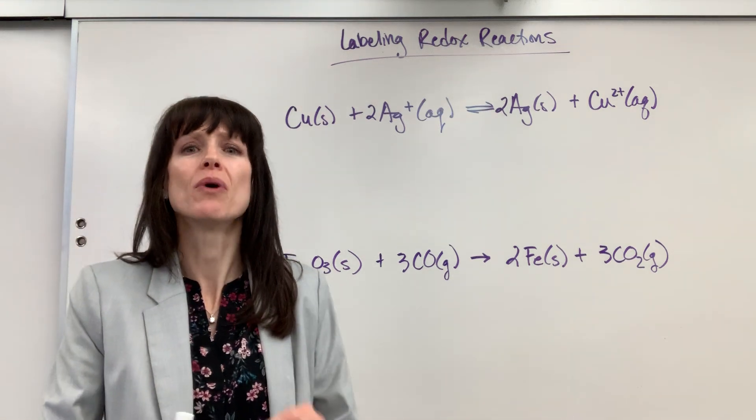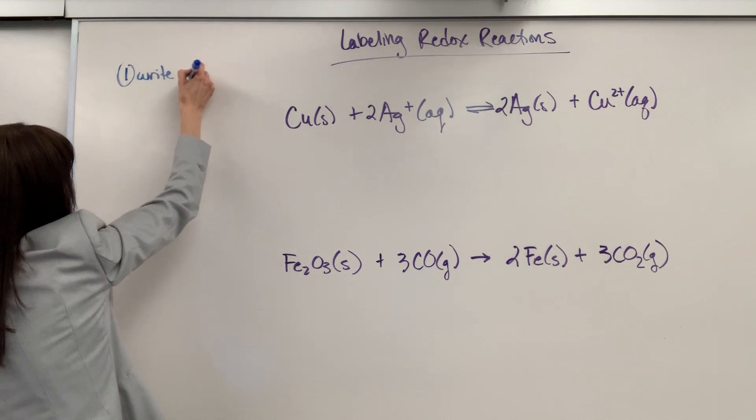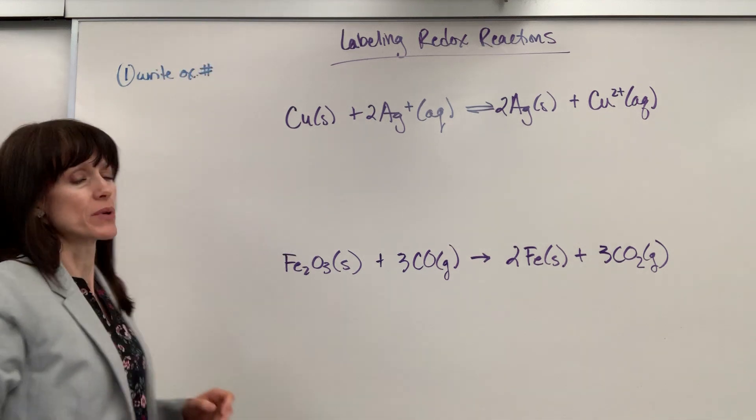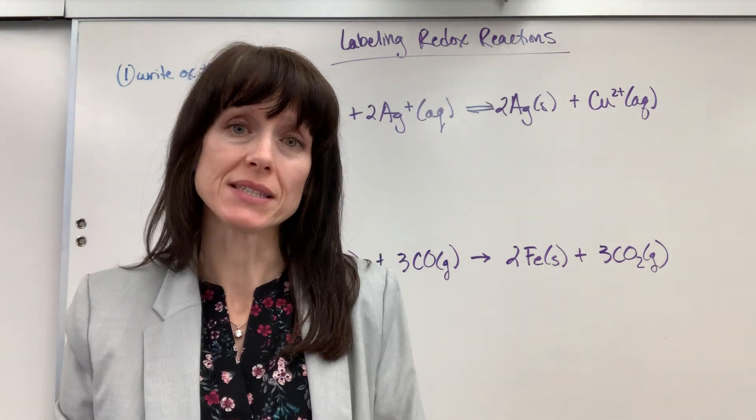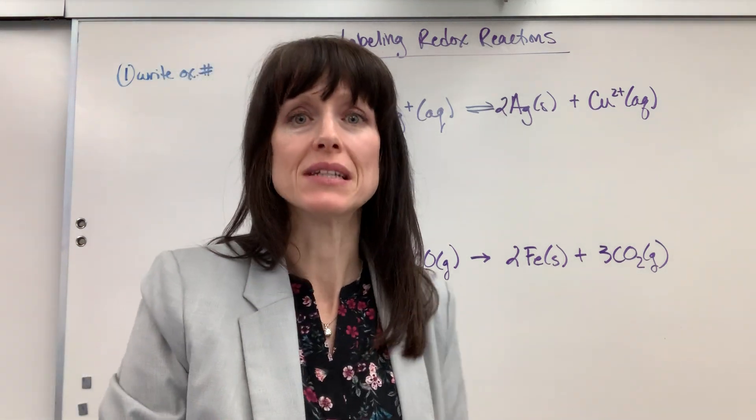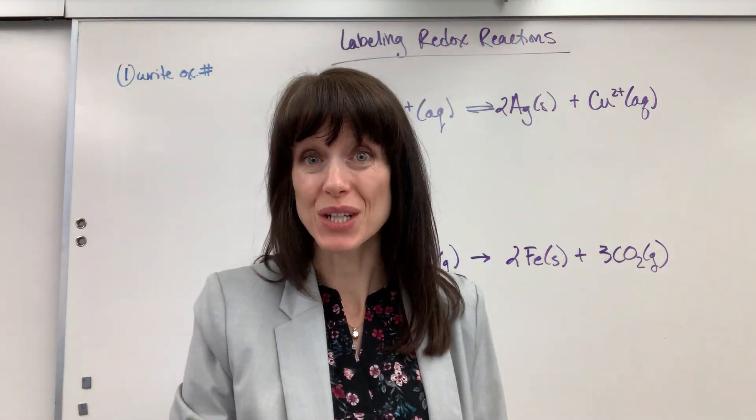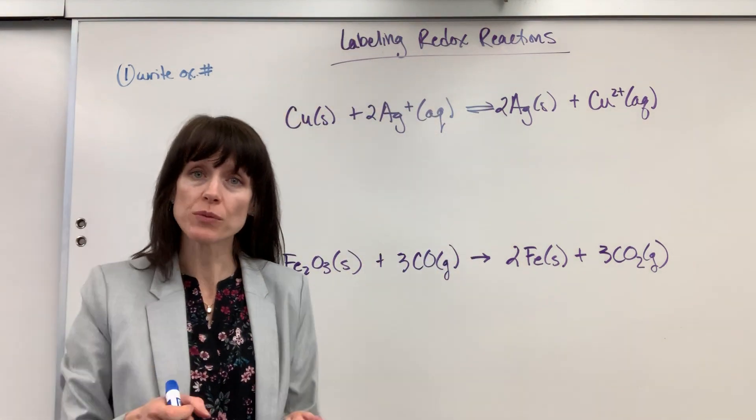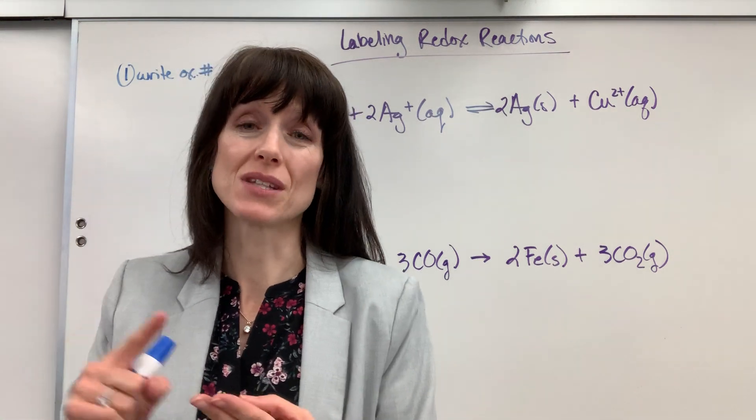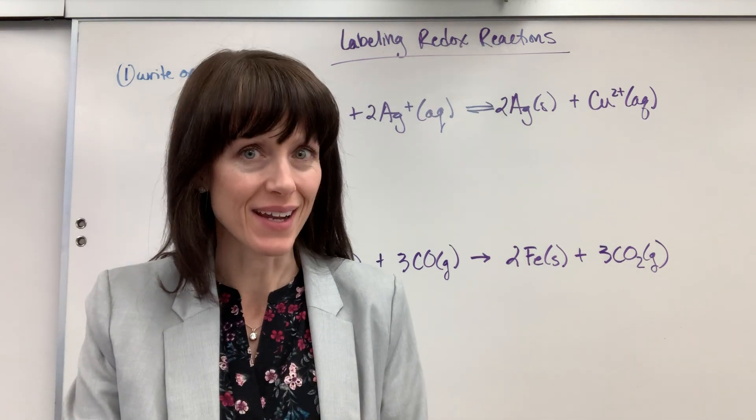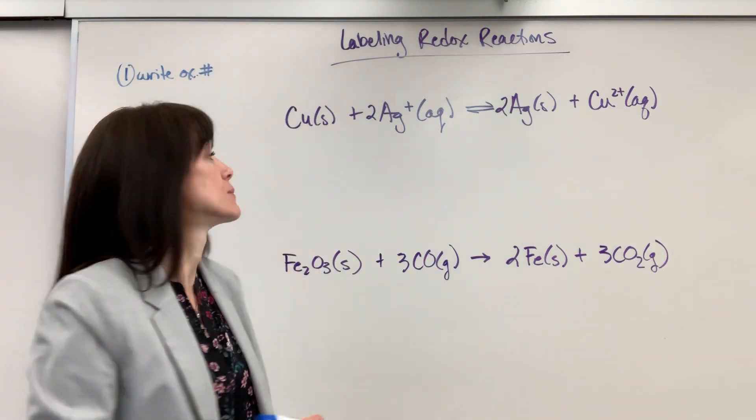So, the first thing you always do, number one, is write the oxidation numbers. Write the oxidation numbers. Here's what we've got to do. We have to figure out which species is gaining electrons and which species is losing electrons. The only way you can do that is with oxidation numbers. We're going to use all of our rules. If you haven't done this yet, watch my video on the rules for oxidation numbers and watch the video on practicing writing, determining oxidation numbers. They're both under the redox playlist.